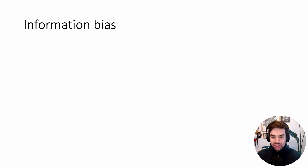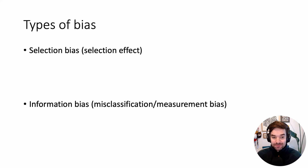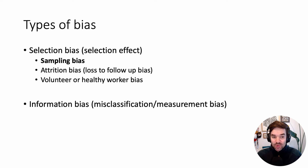Another type of bias is information bias, and there's also some information bias going on here — he clearly doctored that photo to convey inaccurate information. The two main types of bias you'll see in the literature are selection bias, sometimes referred to as selection effect, and information bias, sometimes referred to as measurement bias or misclassification bias. There are subtypes within each. Within selection bias, there's sampling bias — more specifically, what Larry did would be called a sampling bias: you didn't get the whole picture, you got a very small, select sample.